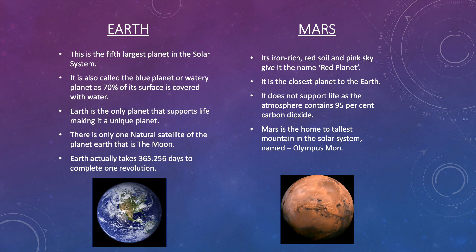Mars: its iron-rich red soil and pink sky give it the name Red Planet. It is the closest planet to the Earth. It does not support life as the atmosphere contains 95% carbon dioxide. Mars is home to the tallest mountain in the solar system, that is Olympus Mons.